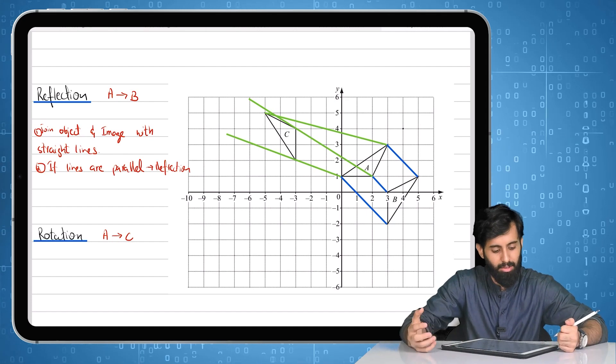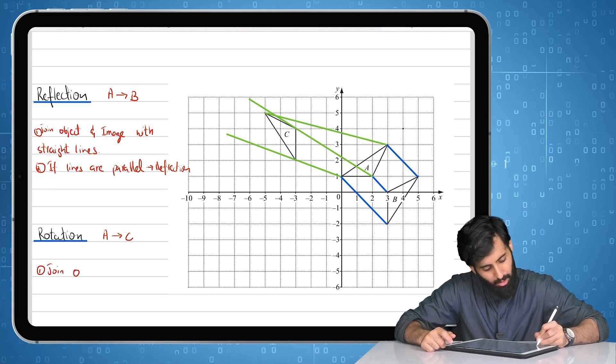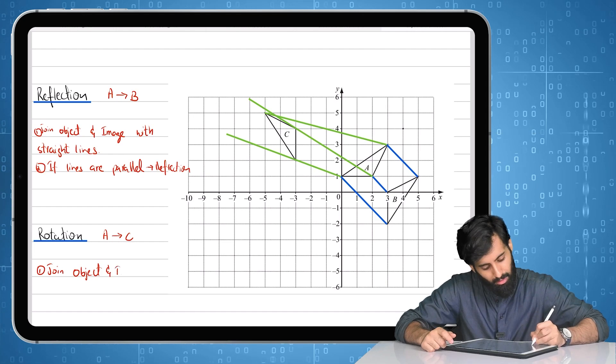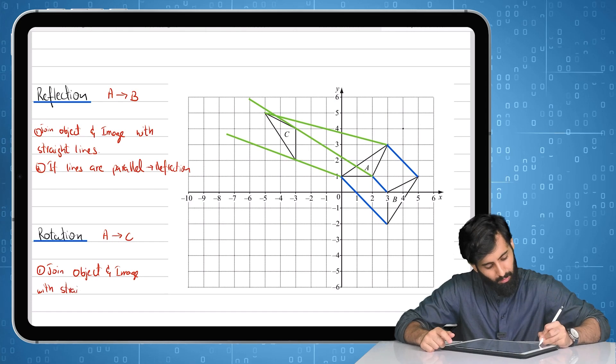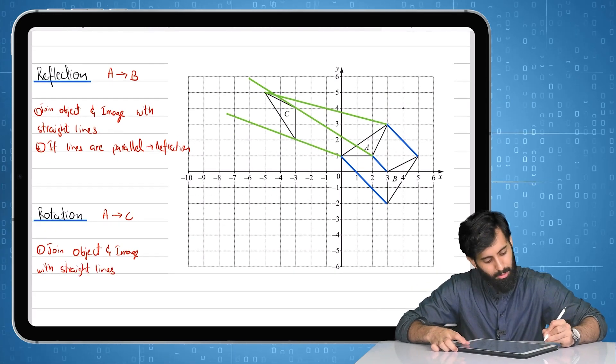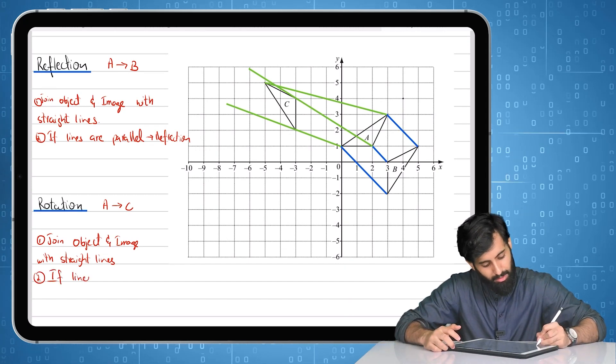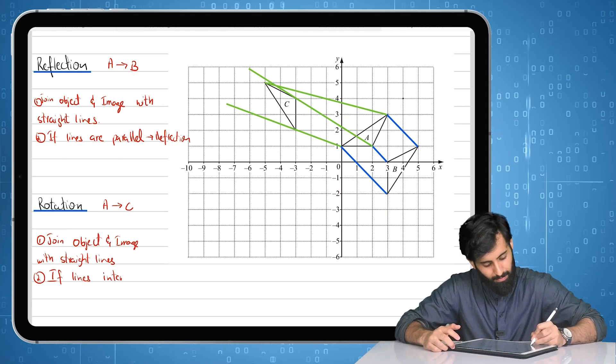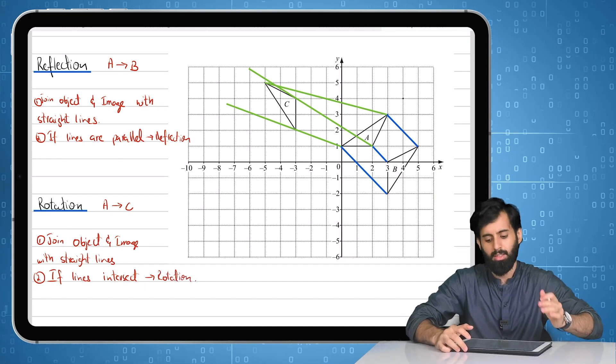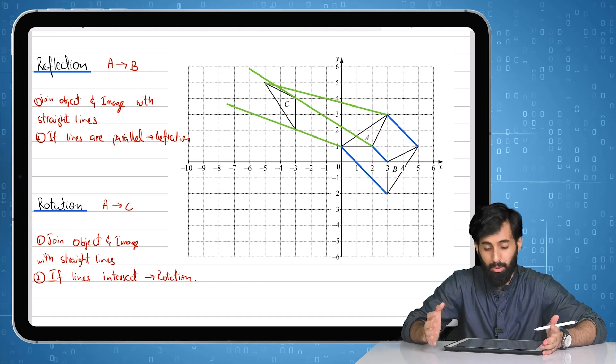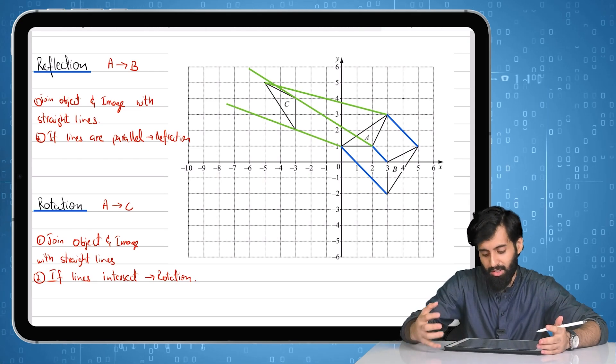Now how exactly do you find out whether it's rotation or not? Well, again step one is the same: that you join object and image with straight lines. Step two is that you identify whether the lines are intersecting or parallel. If lines intersect, then it's definitely a rotation. So this is something that will come in handy when you have to describe the transformation.